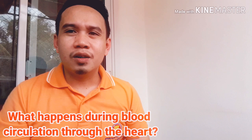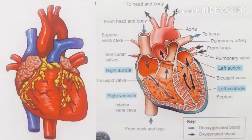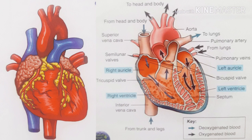Now let's make clear what happens during blood circulation through the heart. Oxygen-poor blood from various parts of the body returns to the right atrium by two large veins. When the right atrium contracts and a heart valve opens, blood flows into the right ventricle. When the right ventricle contracts, blood leaves through an artery to the lungs where gas exchange takes place.